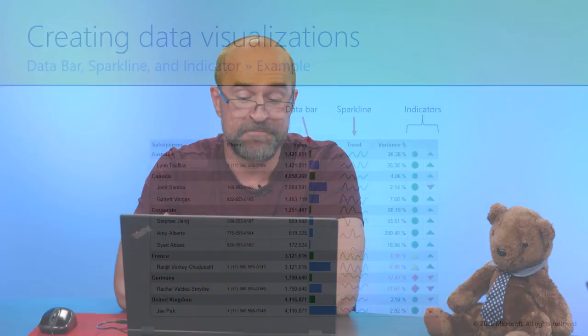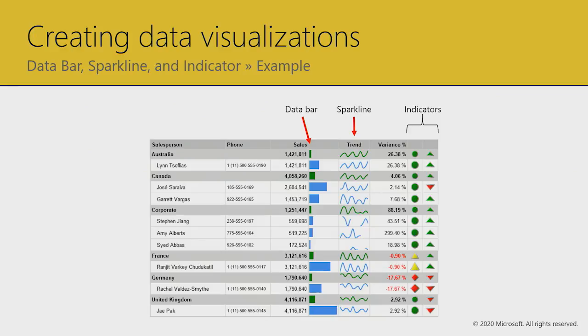We could enhance our report by adding a data bar to see relativity, adding a sparkline to see across the year what the progress has been, and then indicators as well. So let's enhance our existing demonstration table with data bars and indicators.